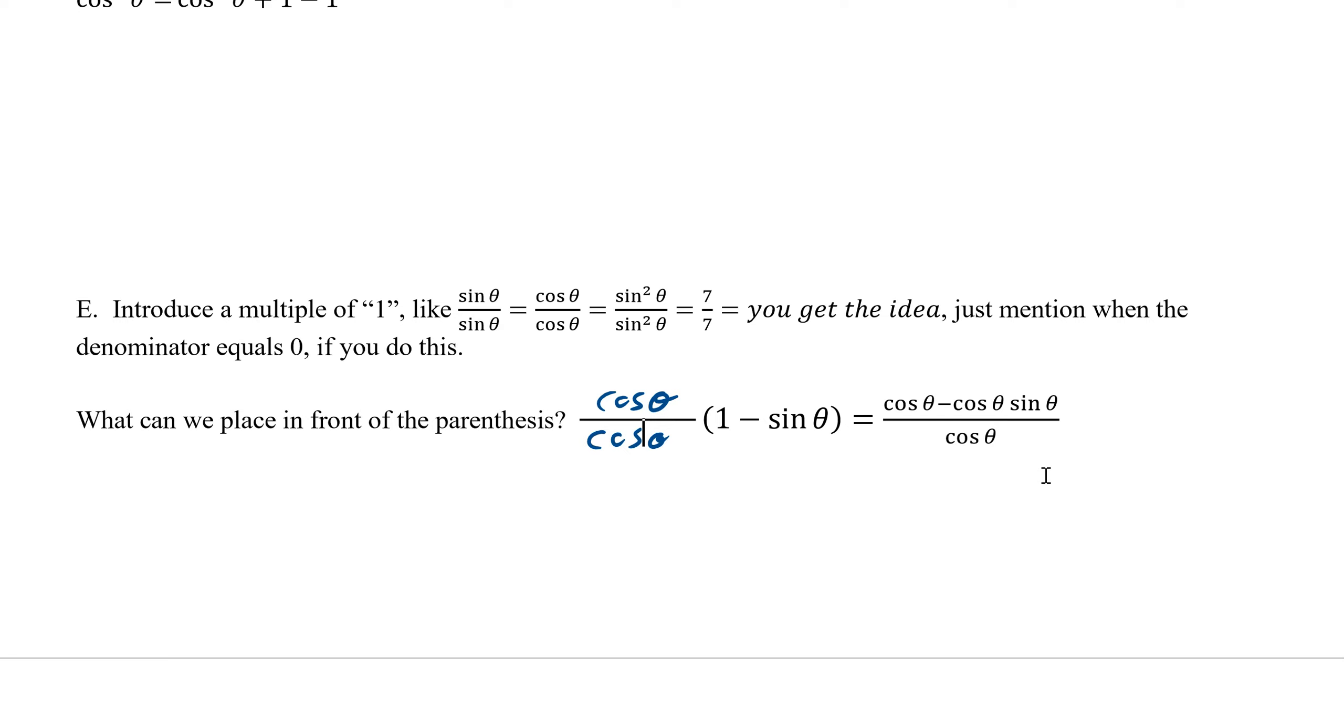Now, if we distribute it by just putting a 1 under this, you get cosine theta minus cosine theta sine theta over cosine theta. And so it gives us what we want. So sometimes it's just looking to see what you need. Oh, it's not a fraction. So let's just put a 1 under it, put a fraction bar there, and make it a fraction by giving the denominator.